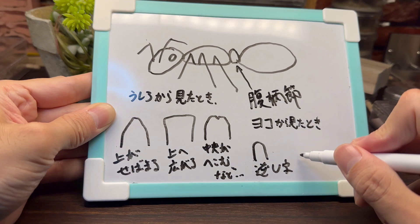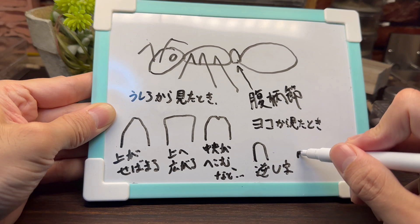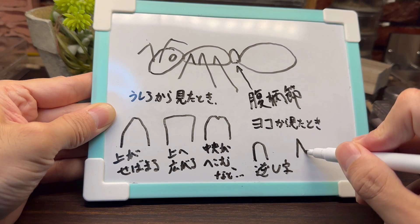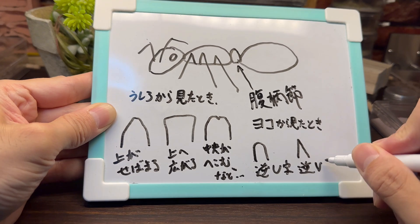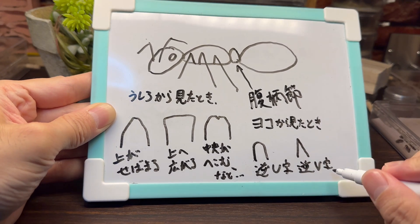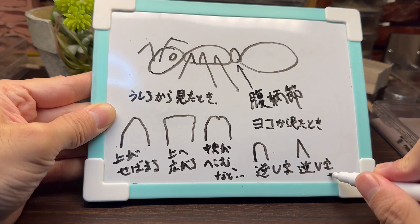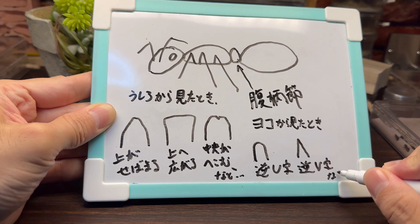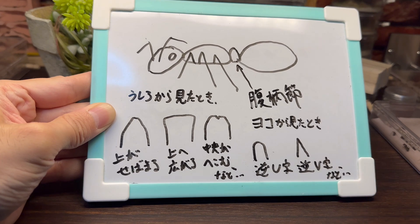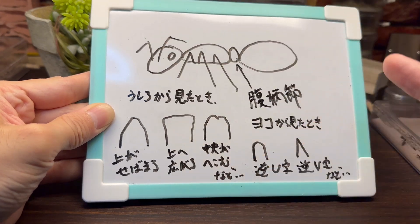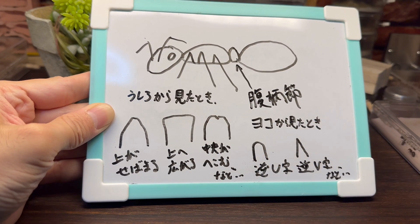次に腹柄節を横から見た場合の特徴の違いについて見ていきます。腹柄節を横から見た場合、このようにアルファベットのUの字を逆にしたような逆U字型の形状、もしくは別の逆U字型の形状などがあります。これらを確認することでさらに種類を絞っていくことができます。